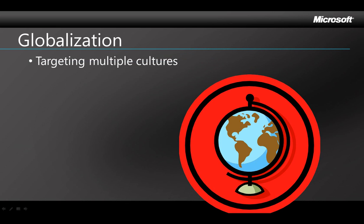Globalized applications are apps that can target multiple cultures. Globalizing your application means that it can be marketed more widely around the world, and Windows Phone 7 has several ways to help you globalize. They're pretty much the same as with other Microsoft technologies, so if you're already familiar with globalization in the .NET framework, then this is going to be just what you expect.